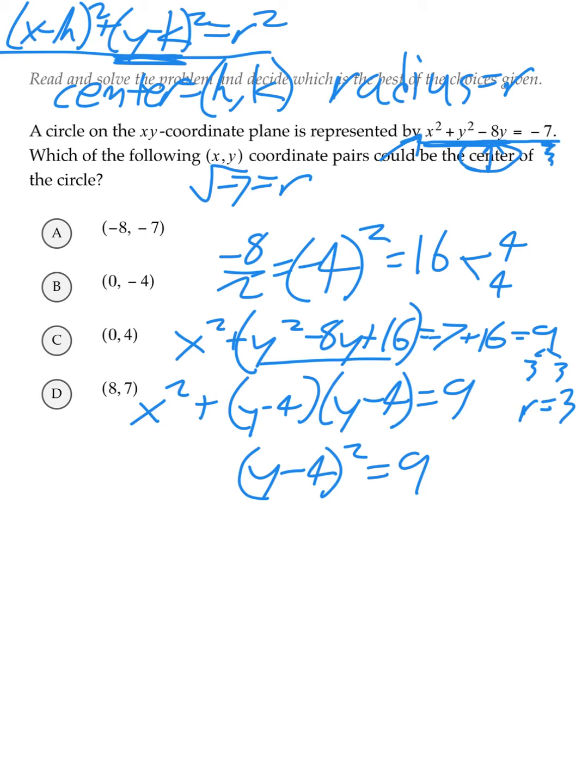Since x doesn't have a coefficient next to it in the equation in the question, we can rewrite it as x minus 0 squared. If we were to square x minus 0 squared, we would still get x squared.